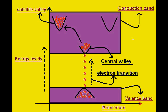In the energy versus momentum diagram, the conduction band shows a central valley (small size) and a satellite valley (larger size). The satellite valley can hold more electrons and therefore has more mass, while the central valley accommodates fewer electrons. As a result, the mobility values vary between these two valleys.